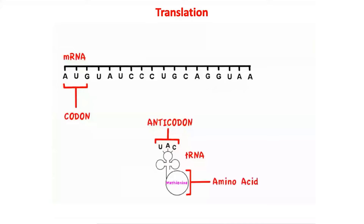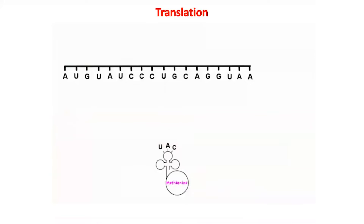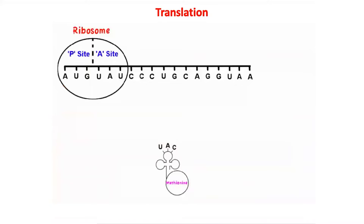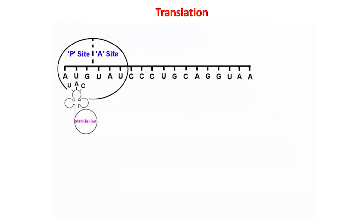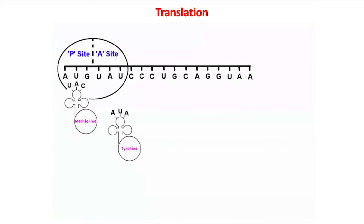Translation takes place in the cytoplasm. The ribosome attaches to the mRNA at the start codon, which is AUG. The ribosome is made up of ribosomal RNA and ribosomal protein, and has two sites: the P site and the A site. A tRNA carrying the complementary anticodon to the start codon AUG attaches in the P site — the first amino acid is always methionine. A tRNA with an anticodon complementary to the mRNA's second codon then comes in from the cytoplasm carrying the next amino acid, in this case tyrosine, and attaches in the A site.